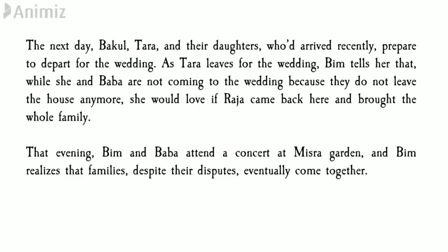As a mature protagonist, Vimla understands the developments of the entire situation and realizes she will forgive Raja for his mistakes. On the day of the wedding, when Tara, Bakul, and their two daughters were about to leave for Hyderabad to attend the marriage, Vimla told Tara that she and Baba would not be able to attend, but asked Tara to pass a message to Raja that he and his family are more than welcome to come to Delhi and spend time with them. This shows Vimla's understanding of the importance of family. In the evening, Vimla and Baba spent time at the Mishra home during a concert, and she again felt the importance of families sticking together. On this note, Part Four ends.